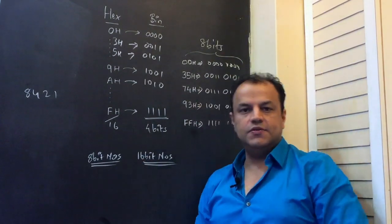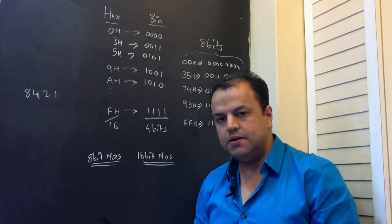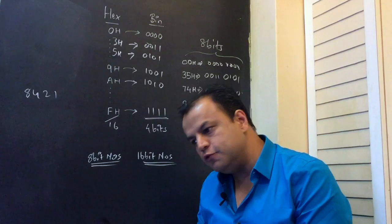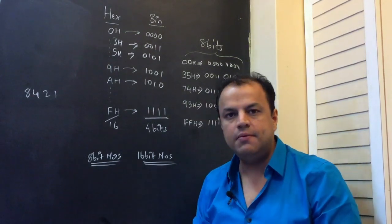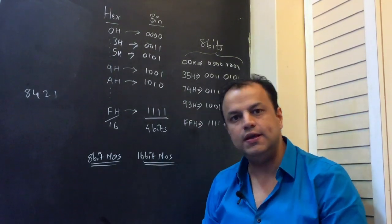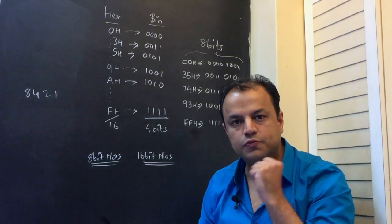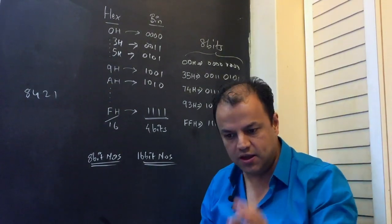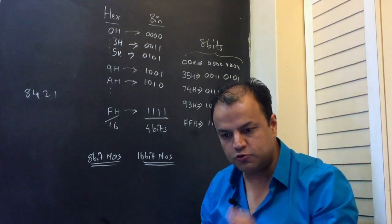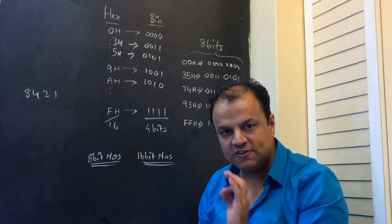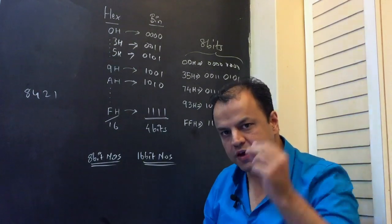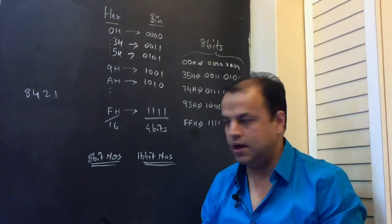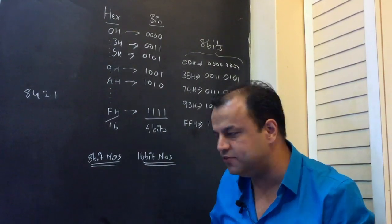When you learn microprocessors, you keep coming across 8-bit numbers and 16-bit numbers all the time. Instead of being confused every time over something so silly, get it clear once for all. If you ever see written 'so and so is an 8-bit register' or 'so and so is an 8-bit number' — what is the range of an 8-bit number? An 8-bit number has 8 bits, so the smallest value will be eight zeros.